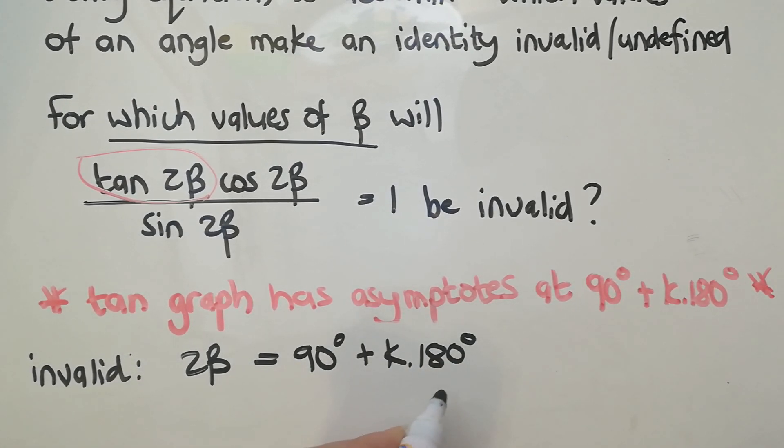So 2β can't be 90. I'm saying it is, but I'm saying it's for when it's invalid. Solving this now, β would have to be 45 degrees plus k90.